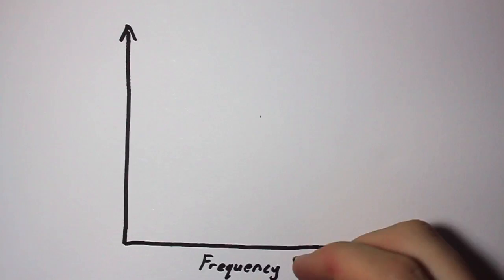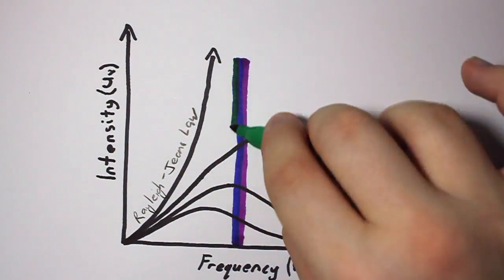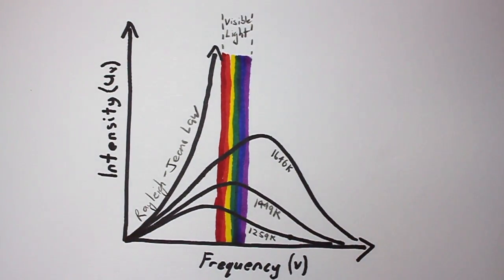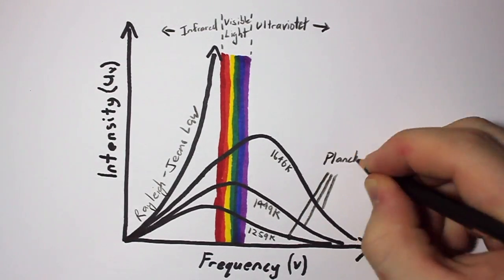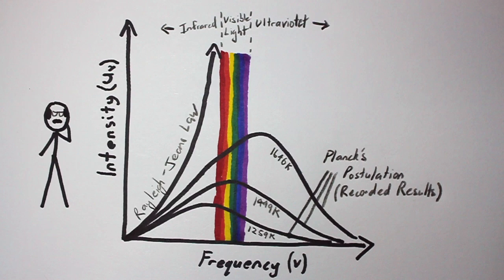Max Planck saw the difference between the classical Rayleigh-Jeans estimation of the intensity emitted and the actual results recorded, and saw that the intensity dropped off as the frequency of light emitted got larger. So Planck makes one of the biggest moves in physics and basically changes his homework solutions to the right answer.